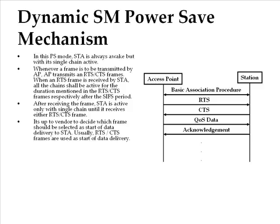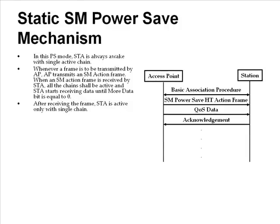In the case of static power save mode, the client turns off all but a single radio, becoming essentially equivalent to an 802.11a or 802.11g client. The client's access point is notified that the client is now operating in static single-radio mode, requiring the access point to send only a single spatial stream to this client until the client notifies the access point that its additional radios are again enabled and operating. This notification to the access point is done using a new management frame defined by 802.11n.